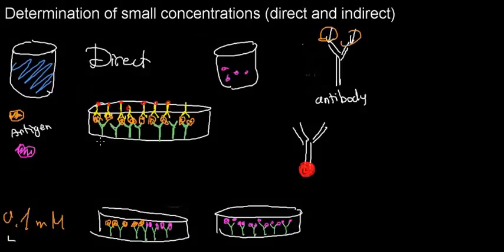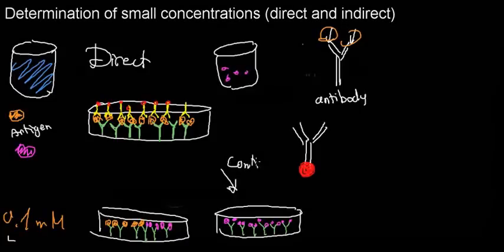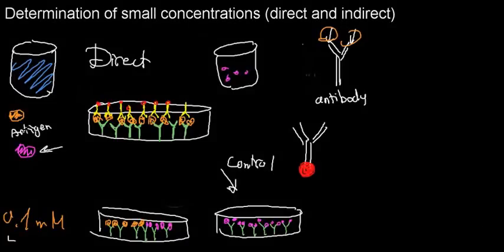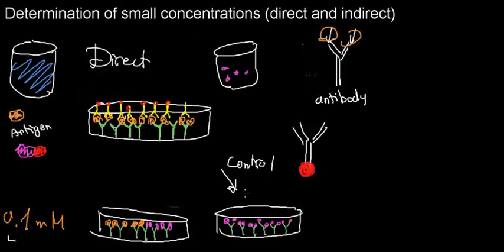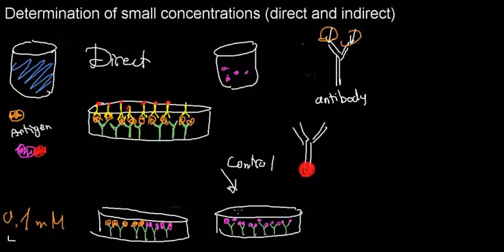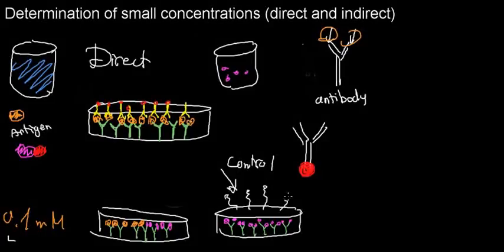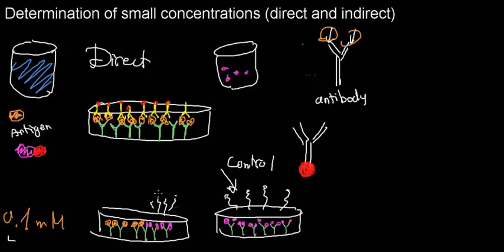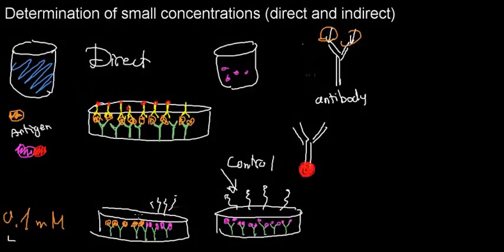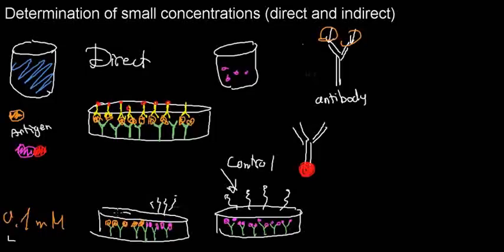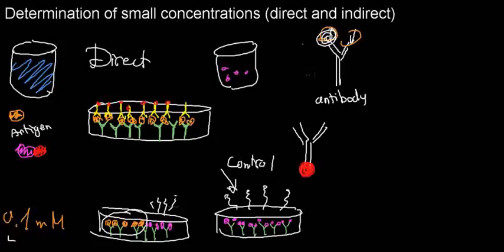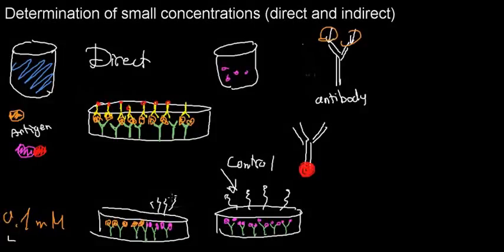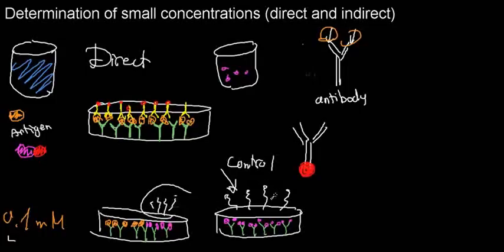Now here's the key: the pink molecule is radioactively labeled. I take the control dish — which emits radiation because it's filled with radioactive pink molecules — and measure its radiation. Then I measure the radiation from the other dish and compare them. The dish with the sample will emit less radiation because some of the binding sites are occupied by the non-radioactive target molecule rather than the pink one. I can use this comparison to solve for the concentration of my target molecule.